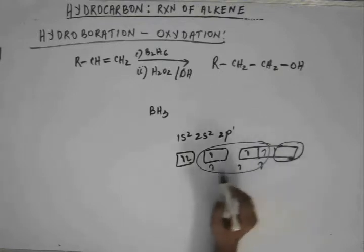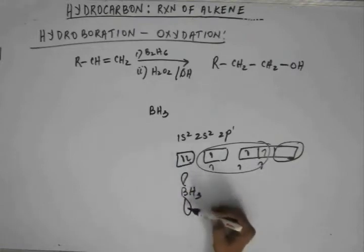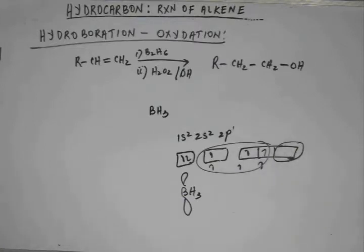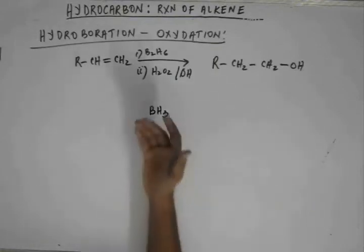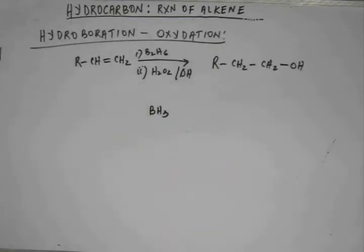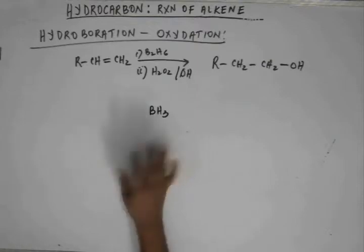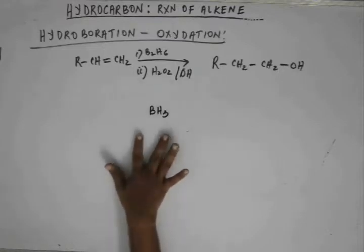So boron is a good Lewis acid — it has one of its 2p orbitals empty. When I draw the empty p orbital of borane, I am referring to this empty 2p orbital. Now, initially we have not added hydrogen peroxide — we just have B₂H₆. B₂H₆ is a dimer of BH₃, but during the reaction the dimer form breaks into the monomer form of BH₃.